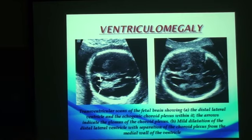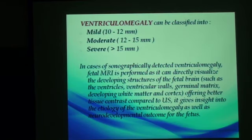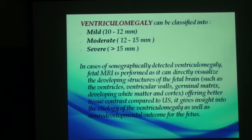The physician should then ask whether the ventriculomegaly is isolated or associated with any other abnormality. Here comes the use of fetal MRI. Ventriculomegaly can be classified into mild, moderate, and severe according to measurements. In cases of sonographically detected ventriculomegaly, fetal MRI is performed. It can directly visualize all the structures of the fetal brain and gives superior tissue contrast compared to ultrasound. We can find the etiology of ventriculomegaly and detect the neurodevelopmental outcome, which is better when it is isolated than when accompanied by other CNS anomalies.